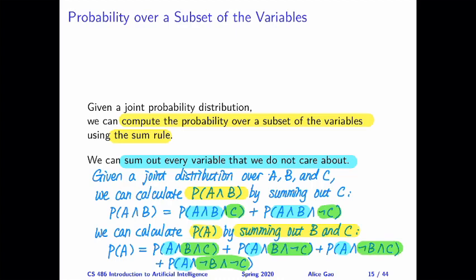To summarize, how do we calculate the probability over a subset of the variables using the sum rule? We need to add up a bunch of probabilities. For the variables that we care about, we fix their values to whatever values we care about. For the variables that we do not care about, we vary their values and consider all possible combinations of values for those variables.